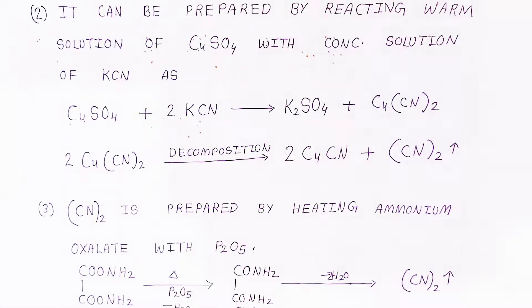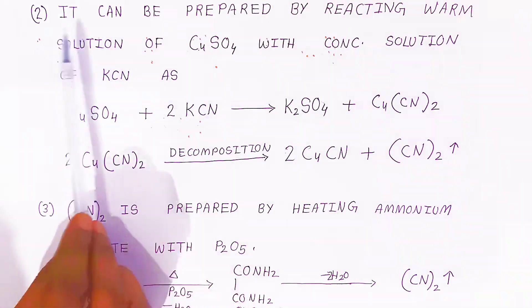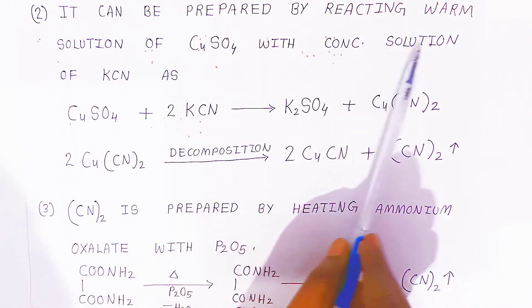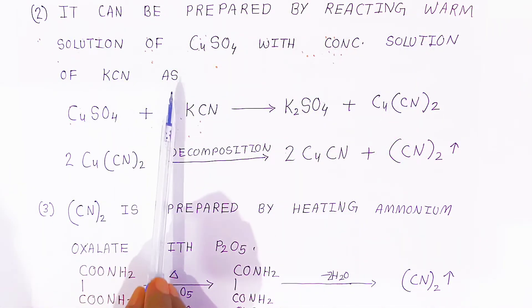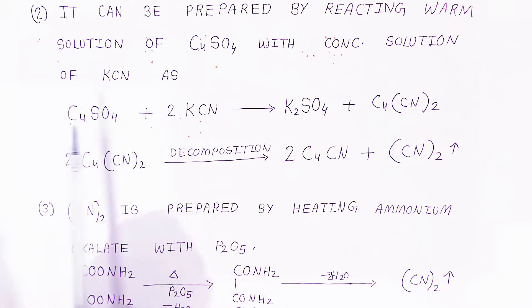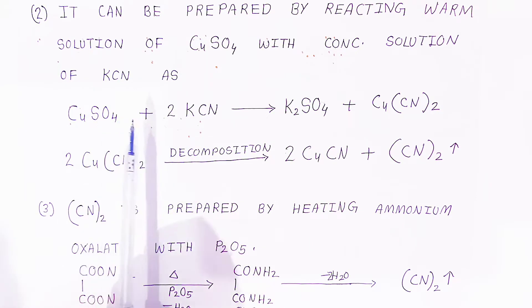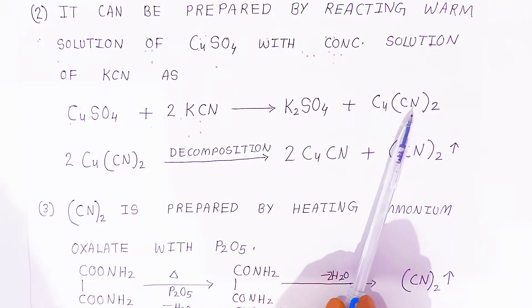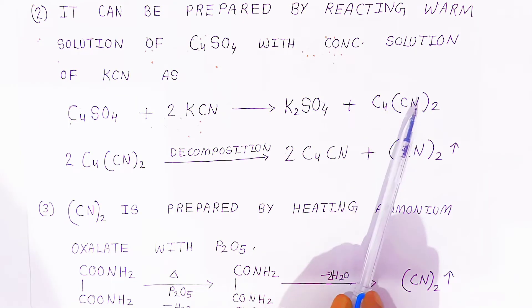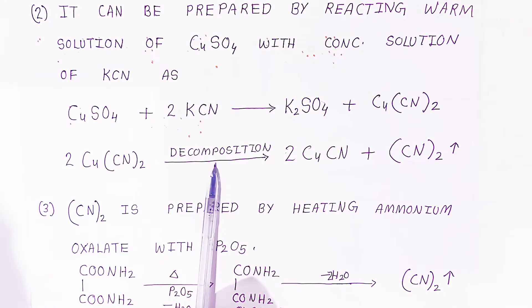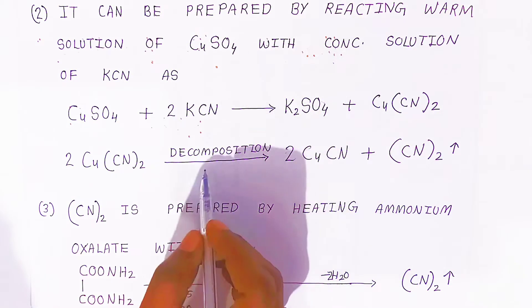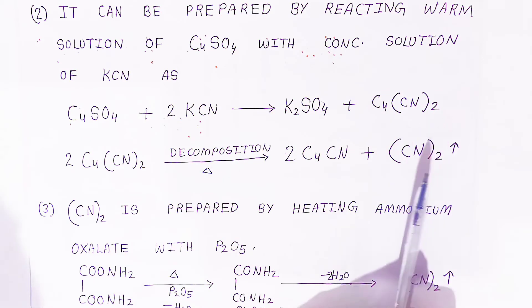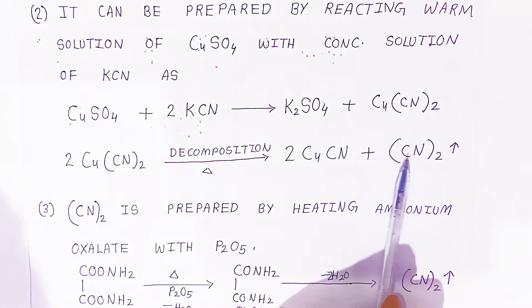The second method: cyanogen can be prepared by reacting a warm solution of copper sulfate with a concentrated solution of potassium cyanide. When you add copper sulfate to potassium cyanide, it forms potassium sulfate and copper cyanide. Then, on decomposition by heating, the copper cyanide yields cyanogen.